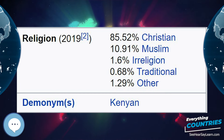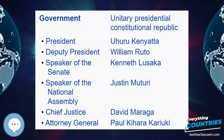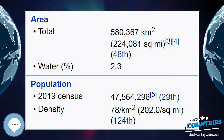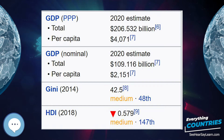In addition, a substantial and expanding informal sector commonly referred to as Jua Kali engages in small-scale manufacturing of household goods, auto parts, and farm implements. Kenya's inclusion among the beneficiaries of the U.S. Government's African Growth and Opportunity Act (AGOA) has given a boost to manufacturing in recent years. Since AGOA took effect in 2000, Kenya's clothing sales to the United States increased from $44 million to $270 million by 2006.